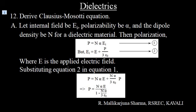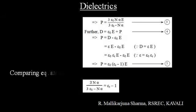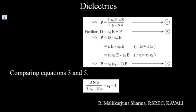Substituting equation 2 in equation 1: P is equal to N alpha times (E plus P divided by 3 epsilon-naught). This implies P is equal to N alpha E divided by (1 minus N alpha divided by 3 epsilon-naught), which gives P equal to 3 epsilon-naught N alpha E divided by (3 epsilon-naught minus N alpha). (Equation 3)